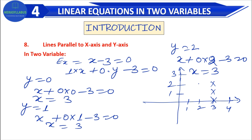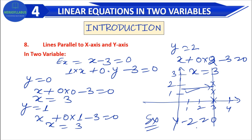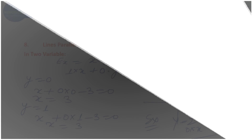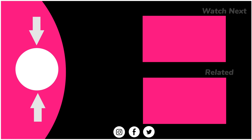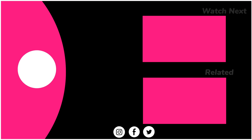When you keep putting in values, it forms a straight line which is parallel to the y-axis at x equals 3. Similarly, if the equation is parallel to the x-axis, for example 0 times x plus something times y minus 2 equals 0, you can solve it and the resulting line will be parallel to the x-axis. This was our introduction video; the next video will be Exercise 4.1. The link will be in the description of the video.